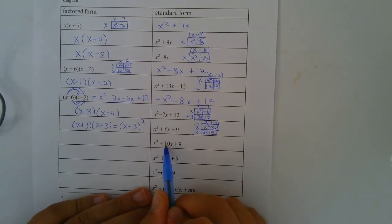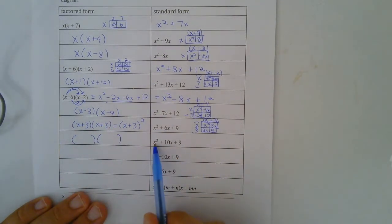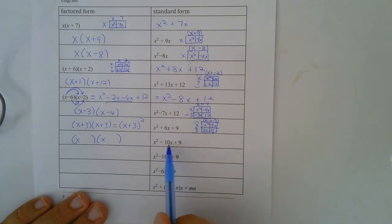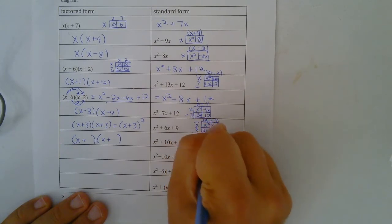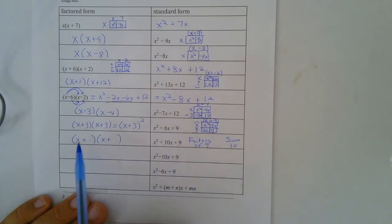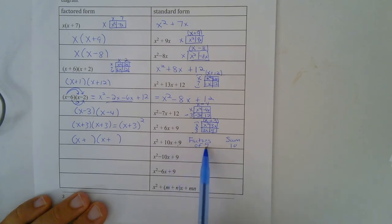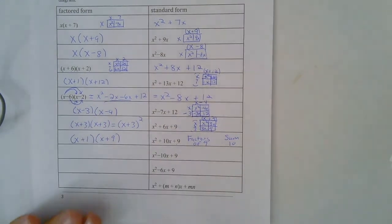Similarly, for x squared plus 10x plus 9, oftentimes people will just factor directly. Another way to do that: I know my two binomial expressions have to be x and x, both positive. We're looking for factors of 9 that sum to 10. Two things that multiply to make 9 and when added make 10 — well, 3 plus 3 is 6, so that doesn't work. The only other way is 1 and 9: 1 times 9 is 9, and 1 plus 9 is 10. So we write 1 and 9. You don't have to use the area model every time.